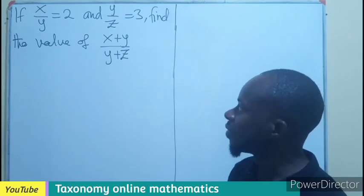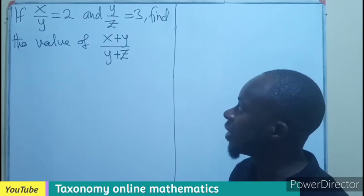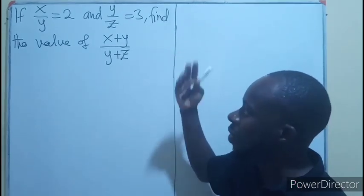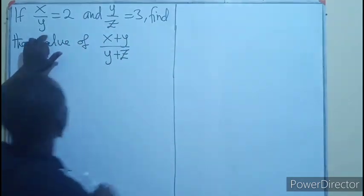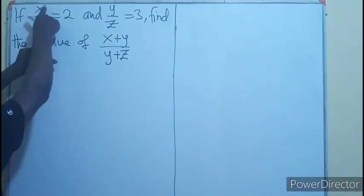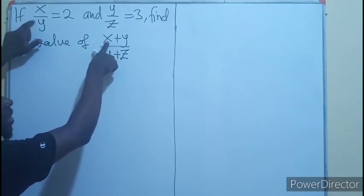Now in solving this, we can solve it two ways. One way is by using the substitution method and the other way is by using y to divide. Since I'm having x over y here, I could have this divided by y to mean the same thing.